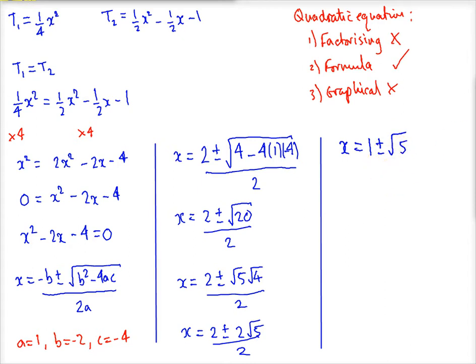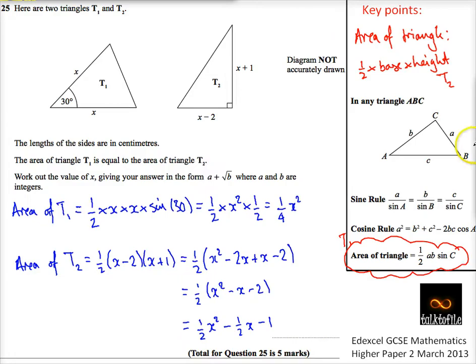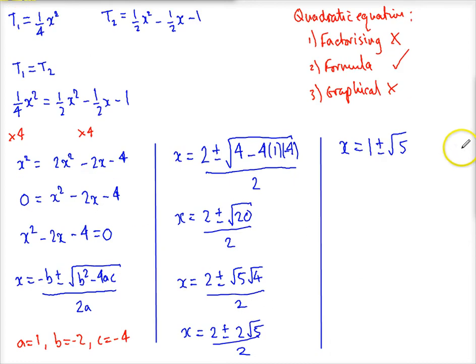Now, if we go back to the question just briefly, it says to give our form a plus root b, where a and b are integers. Well, we've got that, but we've got two answers. Now, we know that the answer is going to be 1 plus root 5, because if we did 1 minus root 5 on our calculator, you cannot have a negative area. So that's why I'm going to take the plus root only.